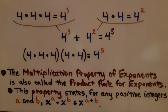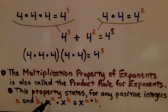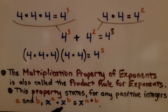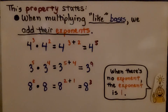The multiplication property of exponents is also called the product rule for exponents. This property states: for any positive integers a and b, x raised to the a power times x raised to the b power equals x to the a plus b. We add the exponents together when the bases are the same and we are multiplying. When multiplying like bases, we just add their exponents.